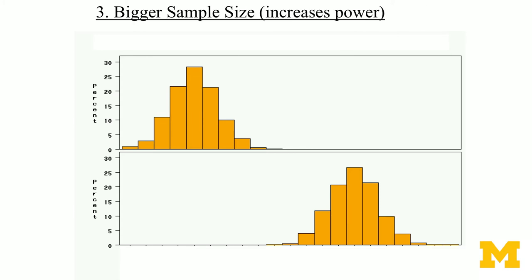The third factor is sample size — a larger sample size increases your power. When the sample size becomes larger, your distribution becomes more squeezed together. When they're more squeezed together, the overlap in the tails will be smaller, which increases your power and reduces the likelihood that you make an inference error.